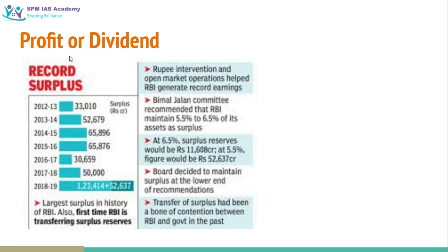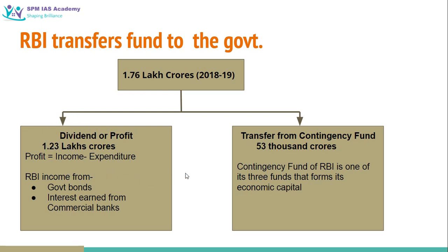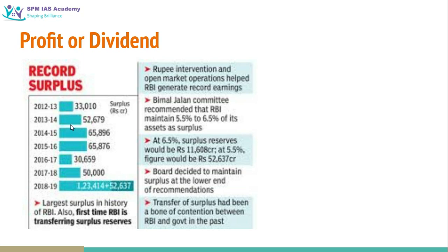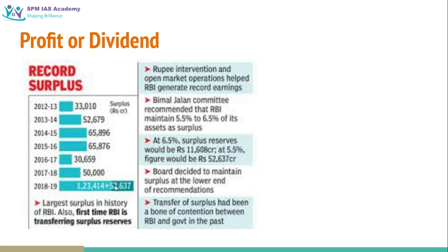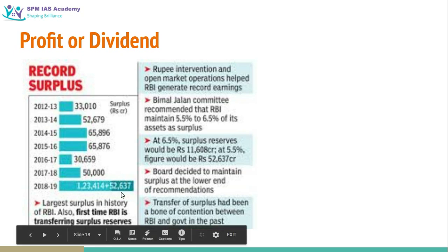Let us analyze the profit and dividend part. Looking at the last 6 years of surplus amounts transferred by RBI, the figures have been approximately 33,000, 52,000, 65,000, 65,000, 30,000, and 50,000 crore. But in 2018-19, the RBI surplus has become 1,23,414 crore — more than 2.5 times the previous year's amount. This surplus RBI is transferring to the government. Additionally, about 53,000 crore is being transferred from the contingency fund. Together these amount to 1,76,000 crore. Earlier, RBI was not transferring anything from the contingency fund — this extra addition of about 52,000 crore is happening for the first time this year.